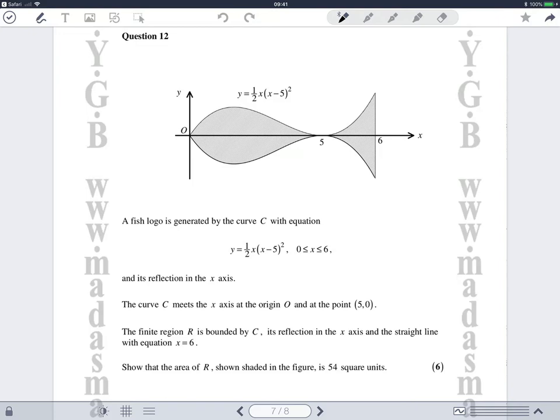The finite region R is bounded by C and its reflection by the x-axis in the straight line with equation x equals six. Show the area of R shown shaded in the figure is 54 square units. Right, so key point to this.